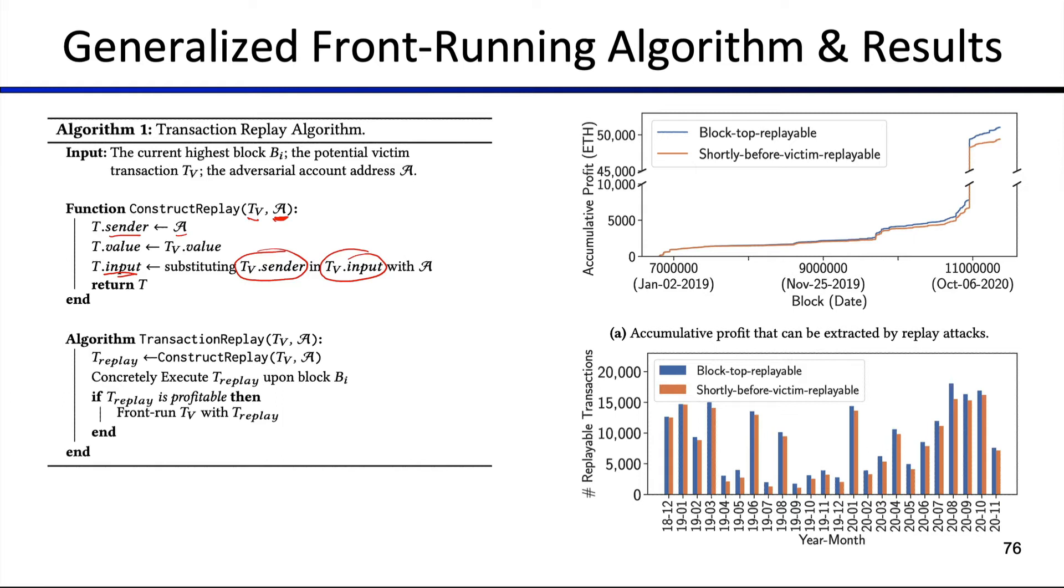What we find is that here on the x-axis we have the timeline that we evaluated this on the Ethereum blockchain, and on the y-axis we have the accumulative profit in Ether. You can see here the block top replayable. So for those blocks where we can replay it on the top block, we can get probably over 50,000 Ether within those 32 months period.